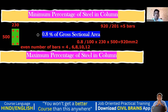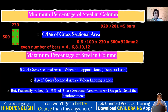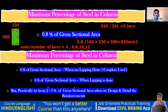Now for the maximum steel percentage. You can give 6 percent of cross-sectional area when no lapping is done — for example, when using large diameter bars like 32 or 36 mm with couplers. If lapping is done, you must restrict it to 4 percent of gross sectional area.